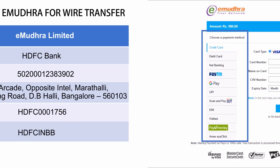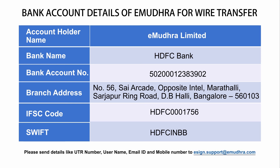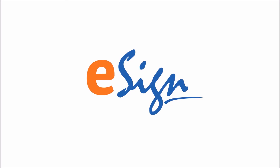If you wish to make the payment via NEFT or RTGS, you can use the banking details mentioned on this page. If paying via NEFT or RTGS, please send details like UTR number, username, email ID, and mobile phone number to eSign.support@eMudra.com. Your eSign account is now ready to be used for signing documents. Thank you for watching the video.